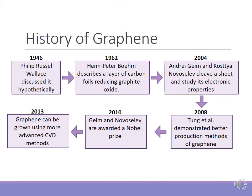In 2010, Geim and Novoselov were awarded a Nobel Prize for their work. In 2013, graphene was shown to be grown using more advanced chemical vapor deposition methods. Graphene at scale can be produced in two main ways: it can be grown on metals and transferred to insulating substrates, or it can be created through the thermal decomposition of silicon carbide.